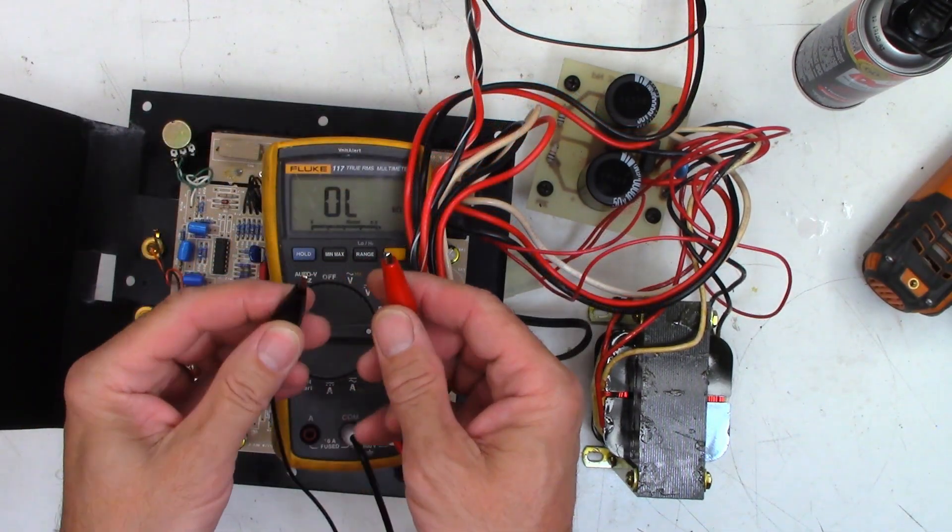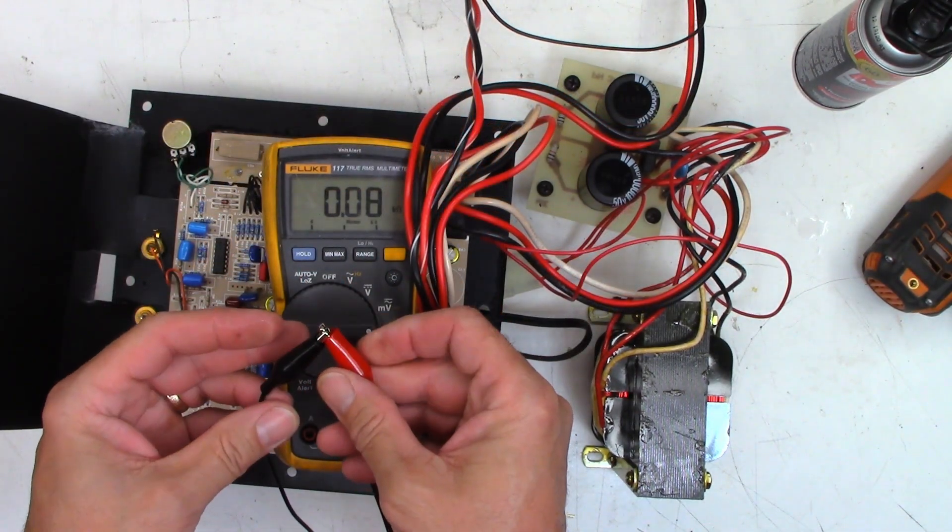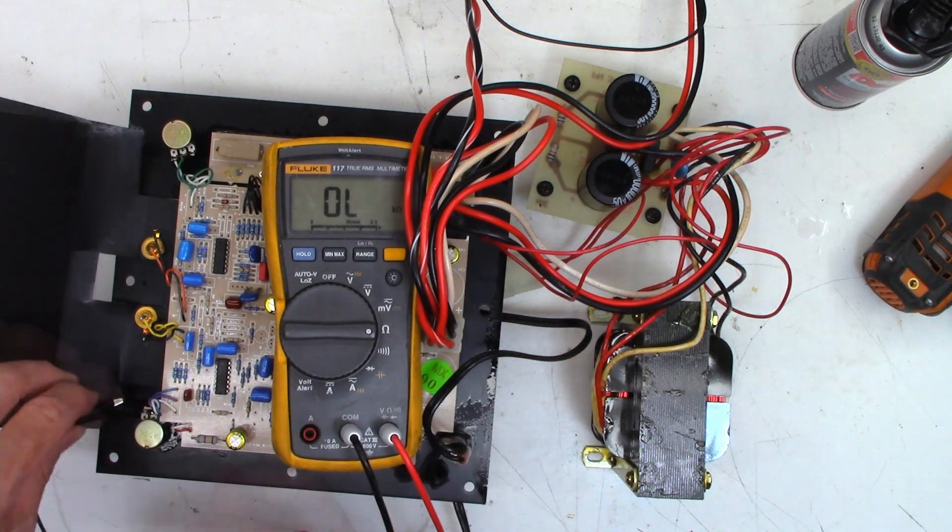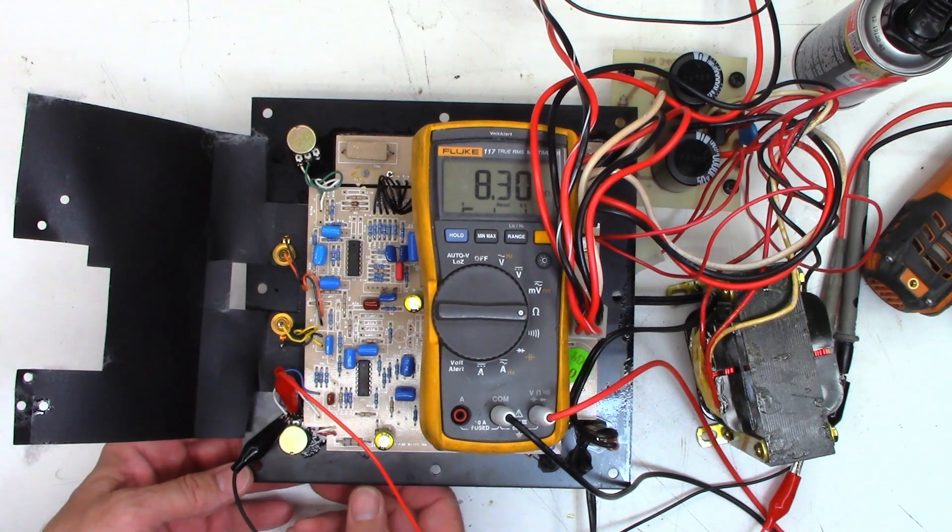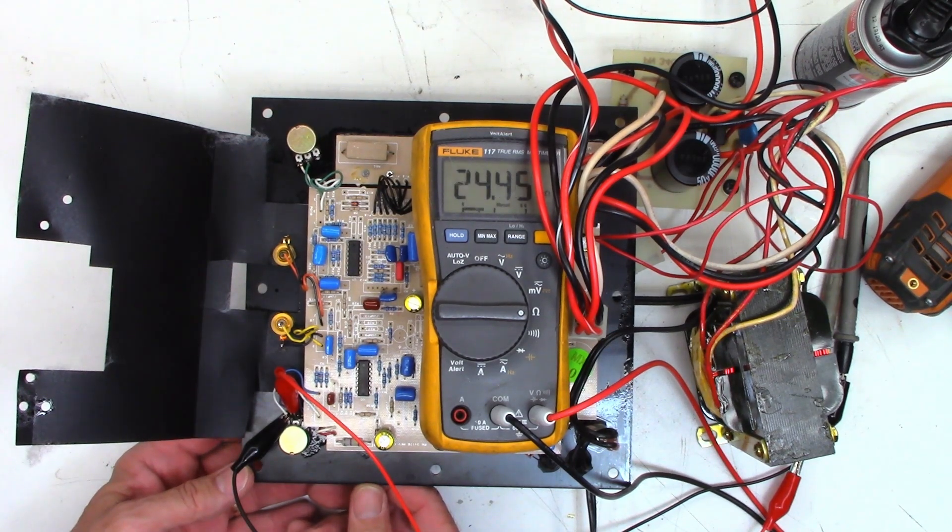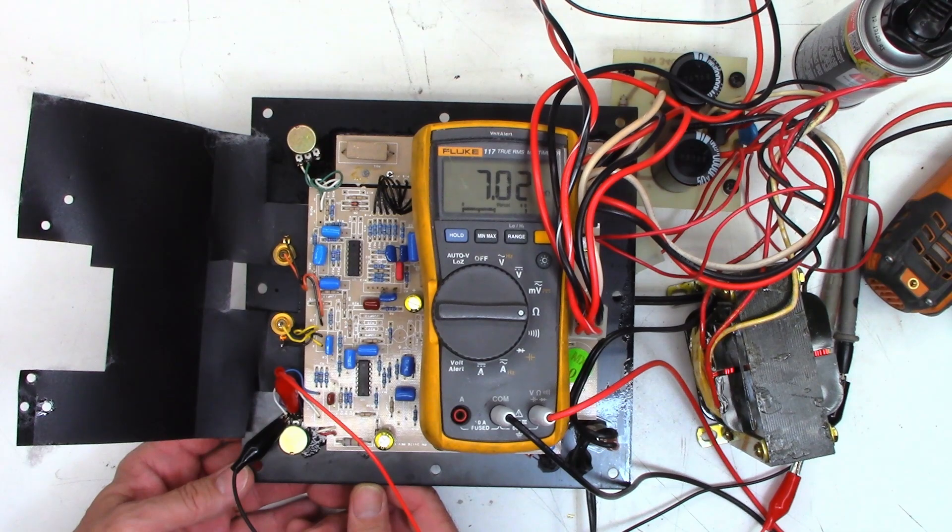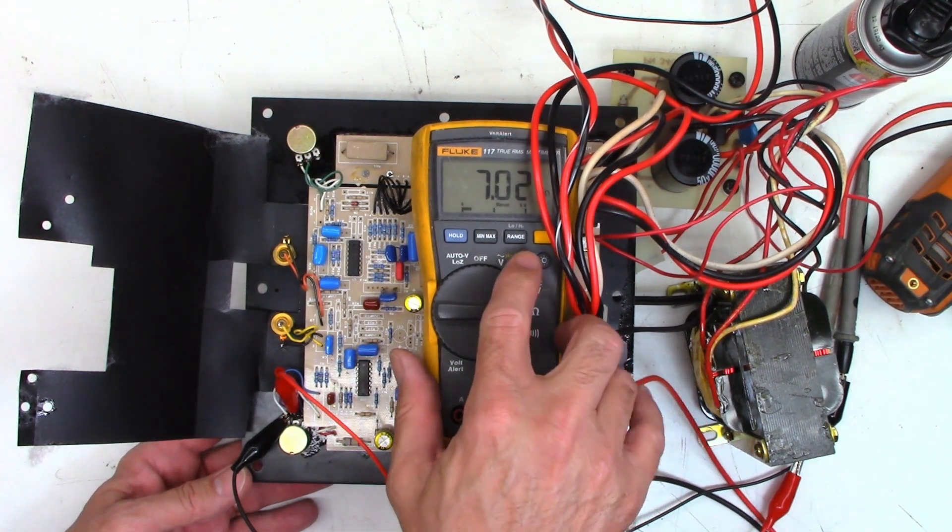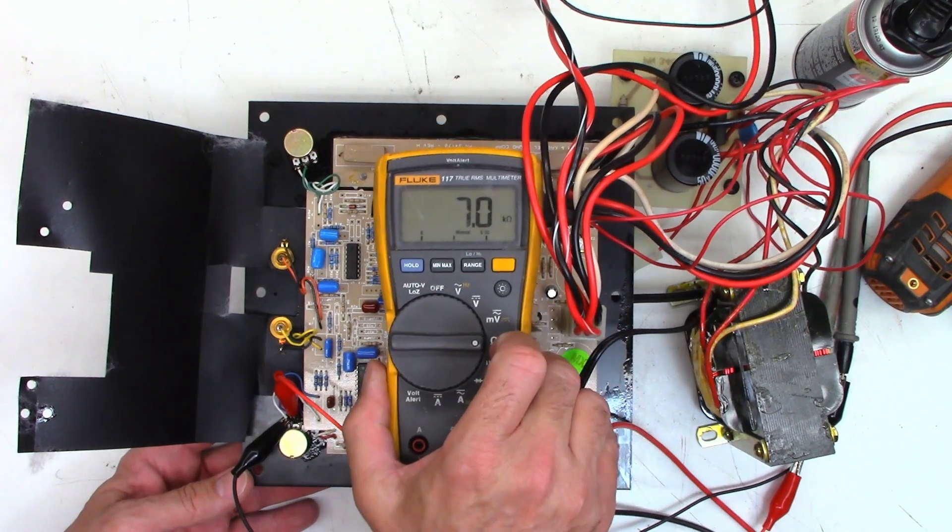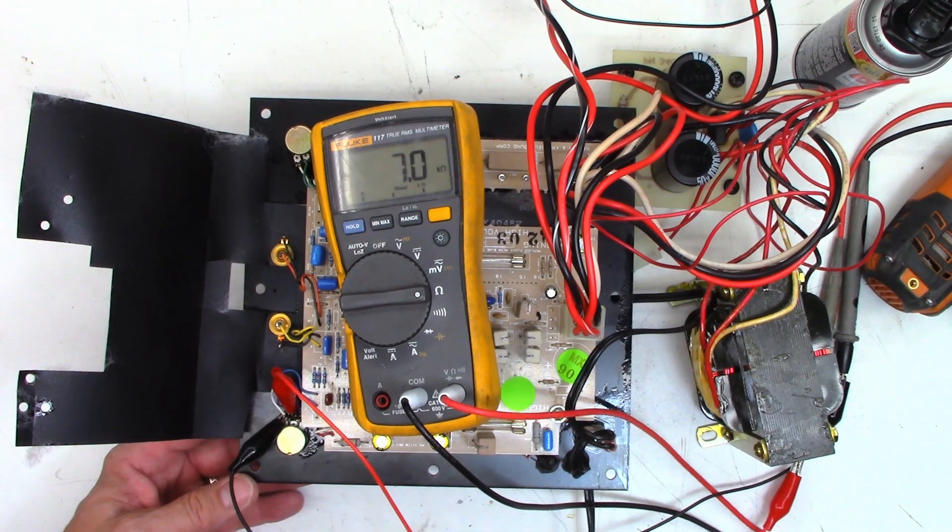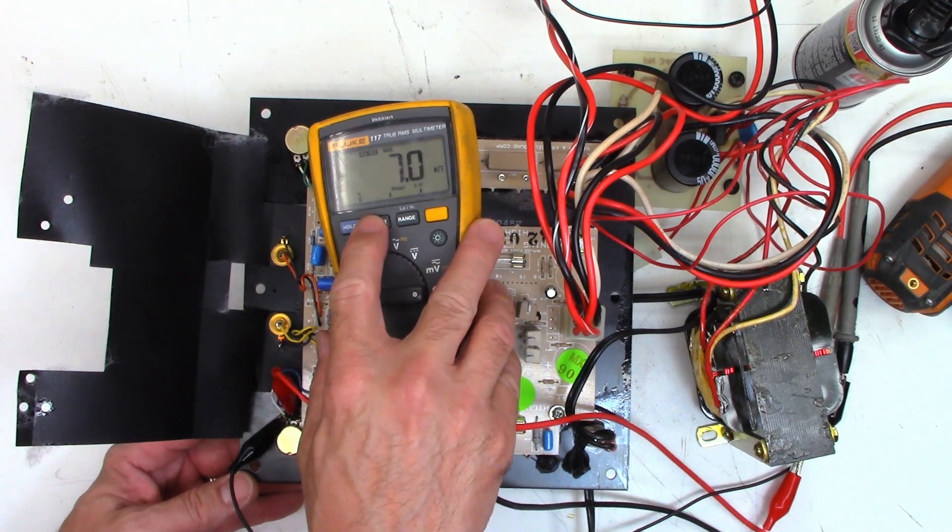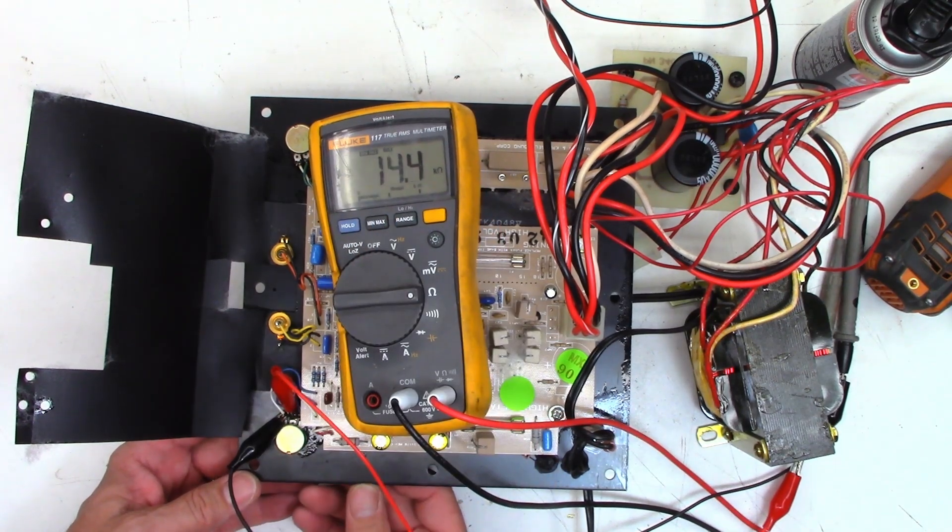All right, so I've got some test leads, and I'm just going to short them out here. We should get zero and we do. So, I'm just going to go ahead and try to get the center terminal and one side, and then we'll just run this up and down. Look at that. It's all over the place. Just for the heck of it, let's go to a higher range. Let's go to 600K. And I'll put it on min-max. Let's put it on max.